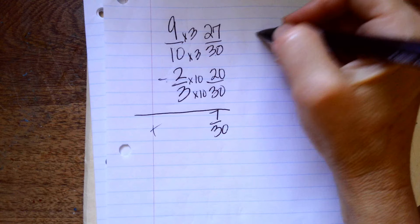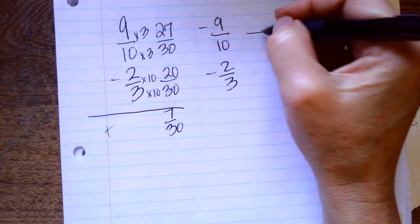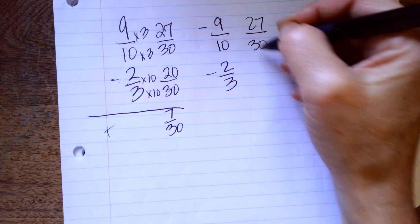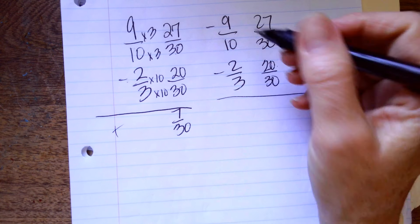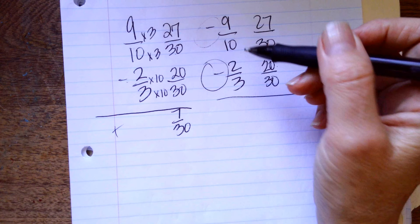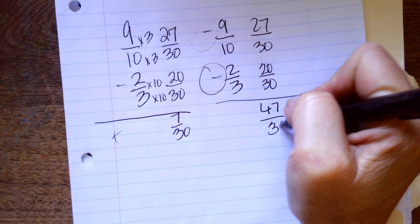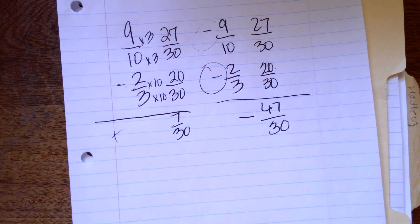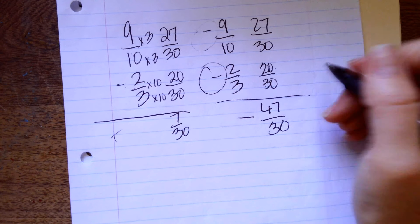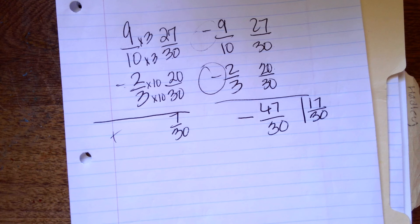If it was negative nine tenths minus two thirds, we'd get the same thing: twenty-seven over thirty and twenty over thirty. Because these are both negative, I would actually add these together. My answer is negative. Then I have to change this into a mixed number, so it'd be one and seventeen thirtieths.